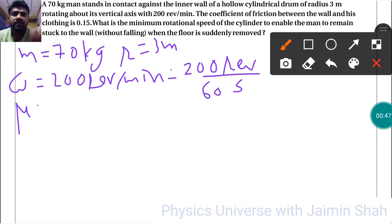What is the minimum rotational speed of this cylinder to enable the man to remain stuck to the wall when the floor is suddenly removed?